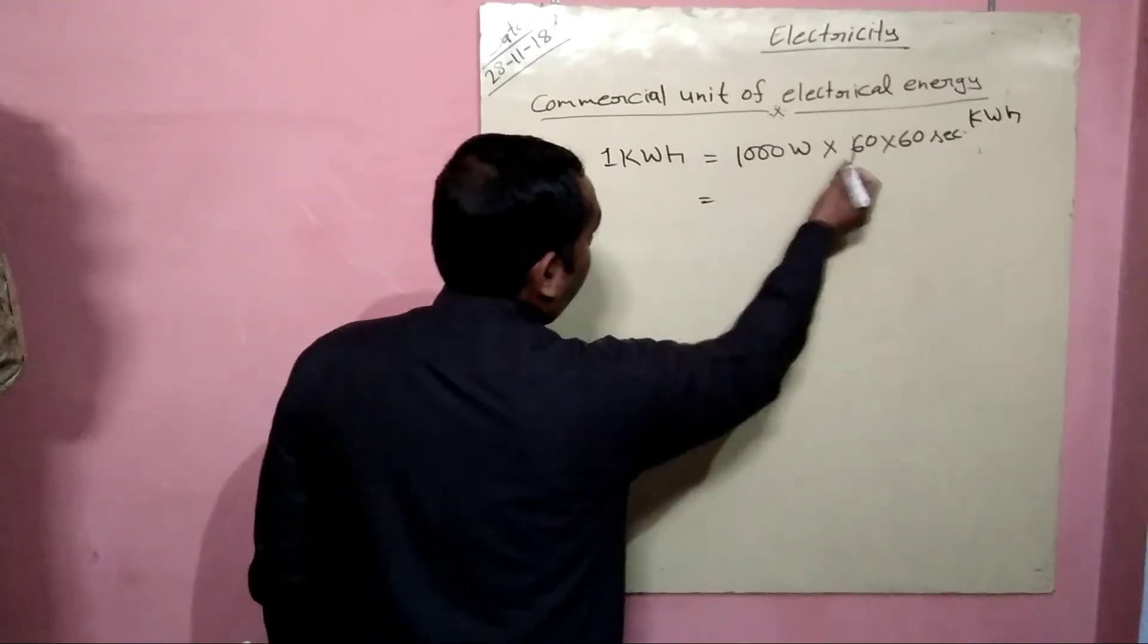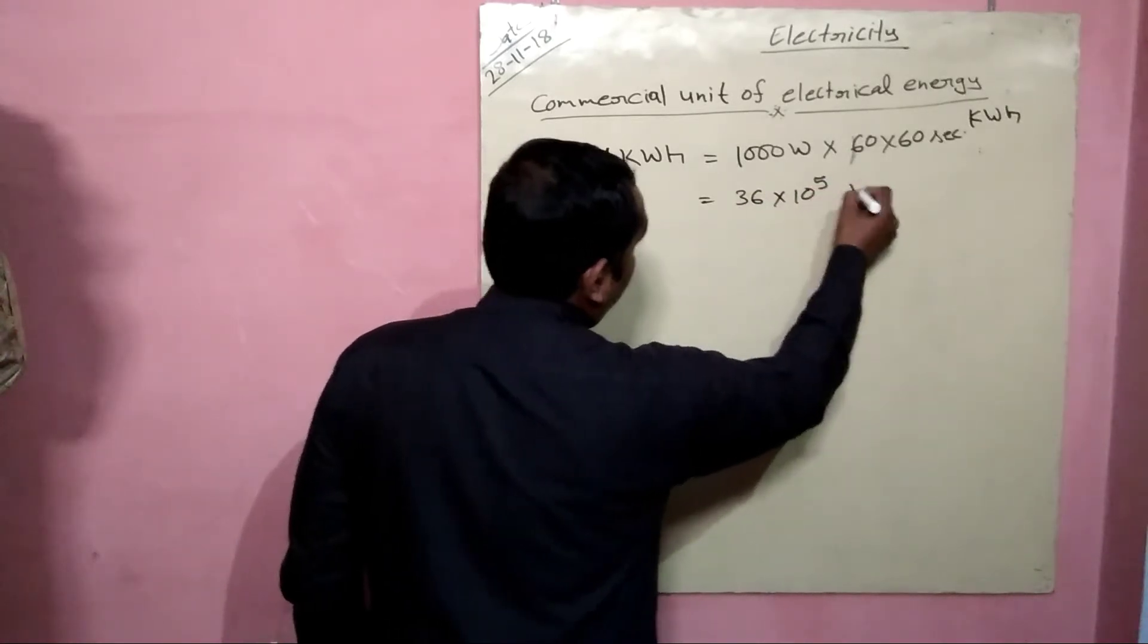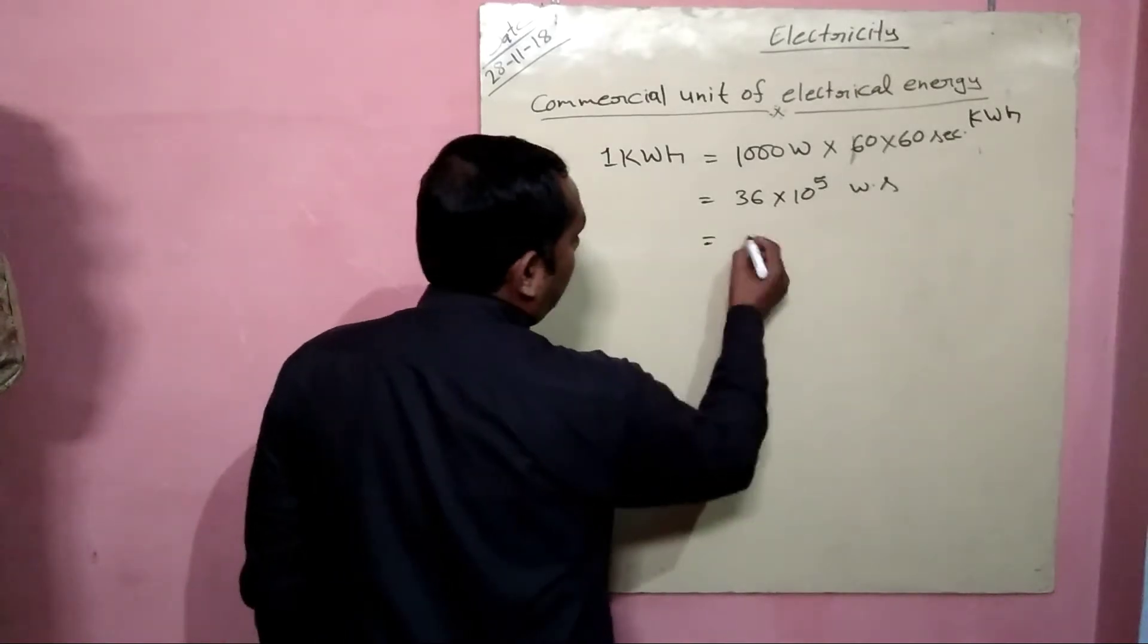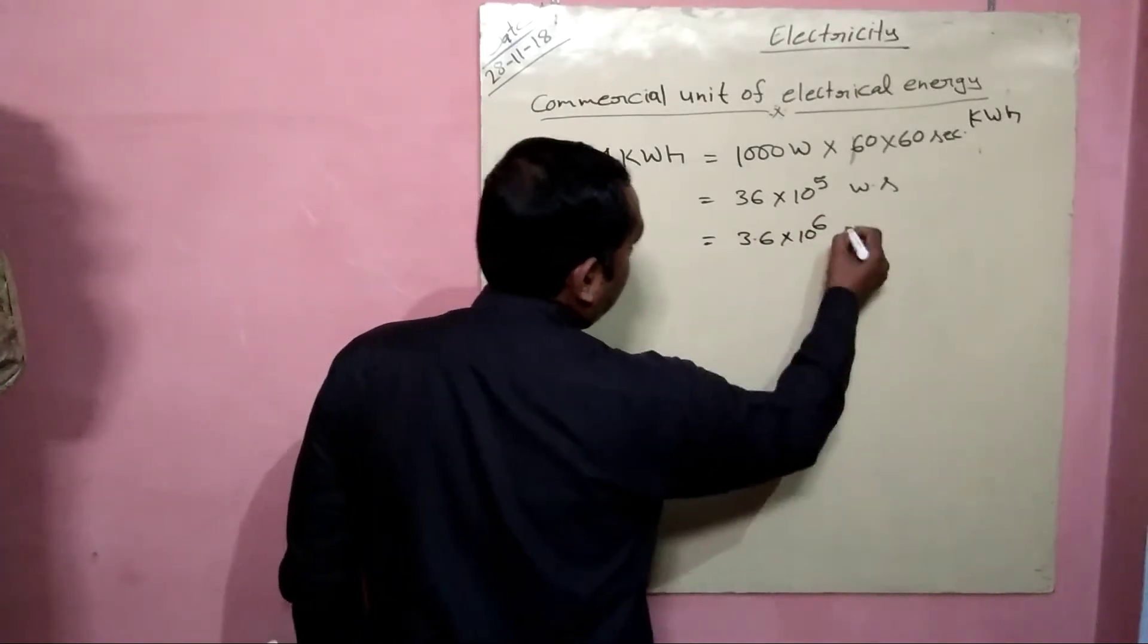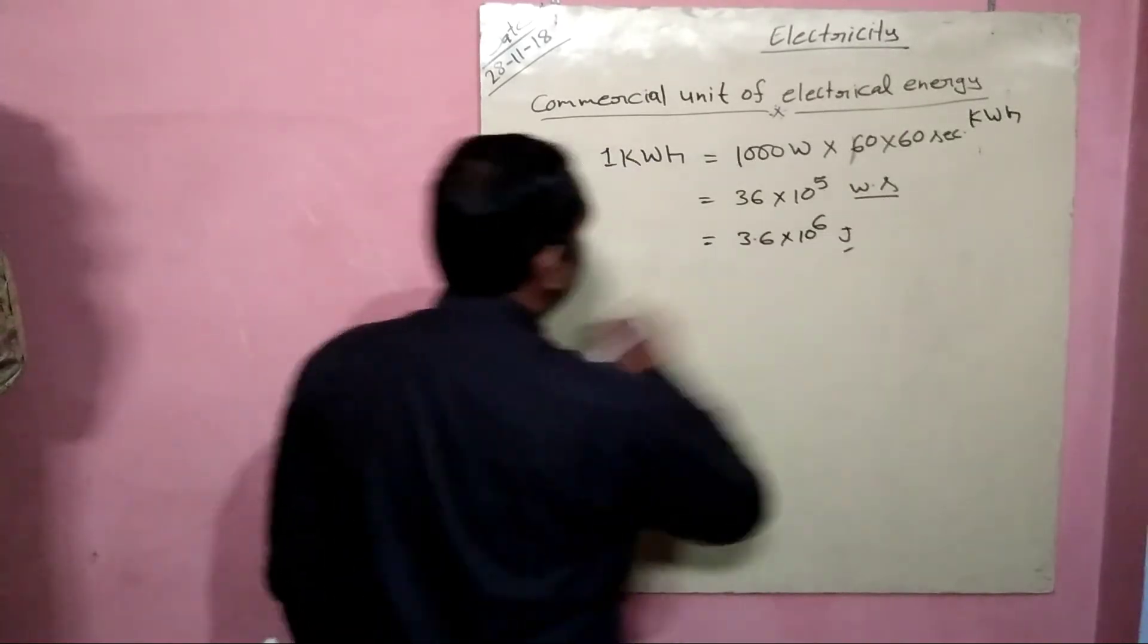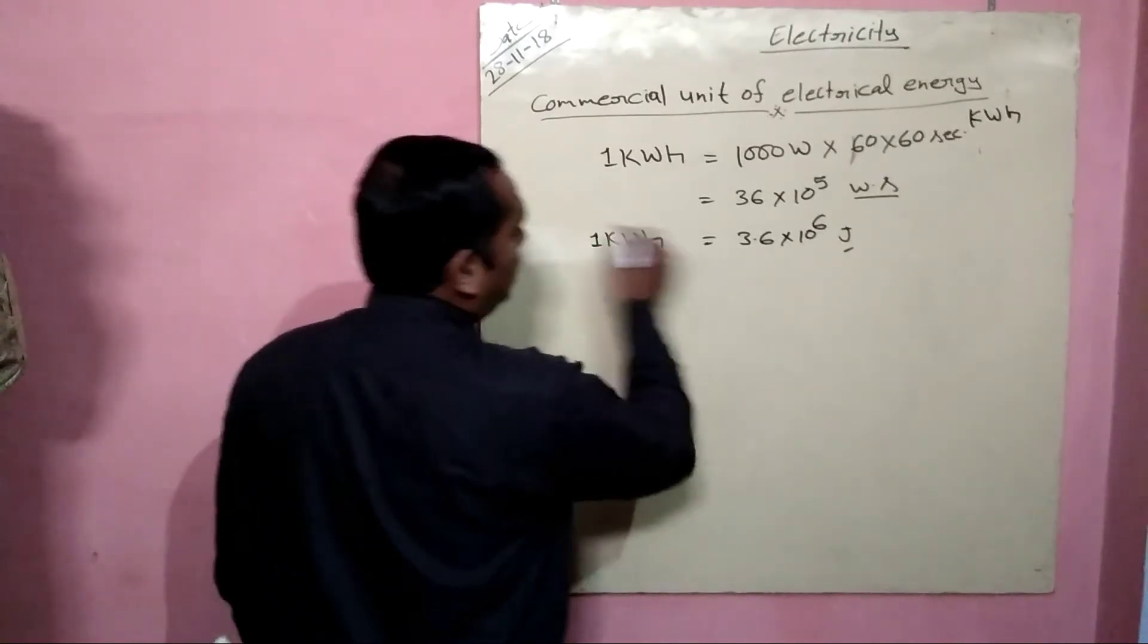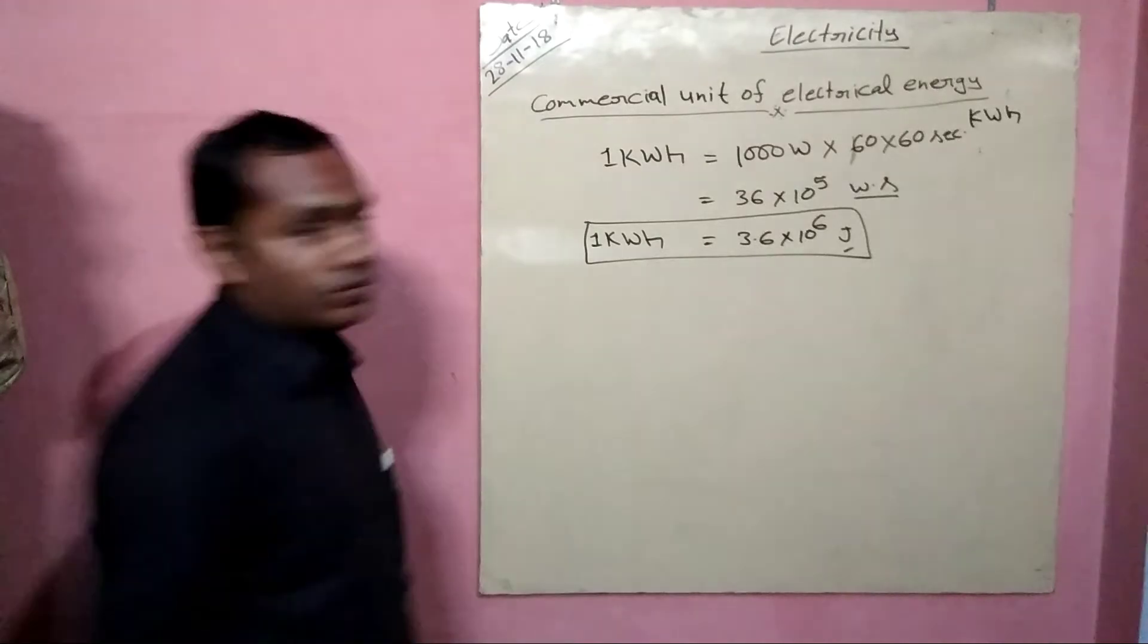So from here, we will get 36 into 10 to the power 5 watt second. Now we can write it as 3.6 into 10 to the power 6, that is Joule, because watt second equals Joule. So one kilowatt hour is 3.6 into 10 to the power 6 Joule.